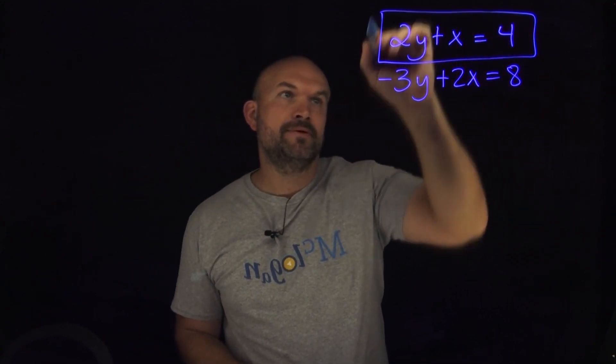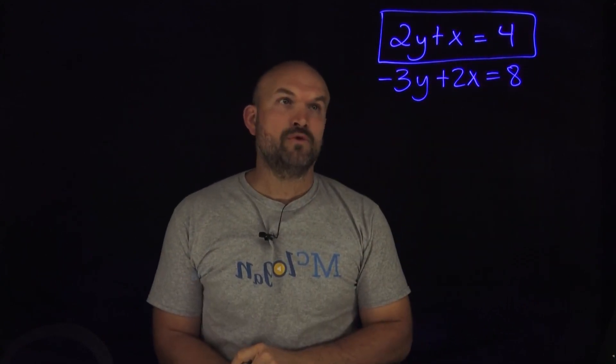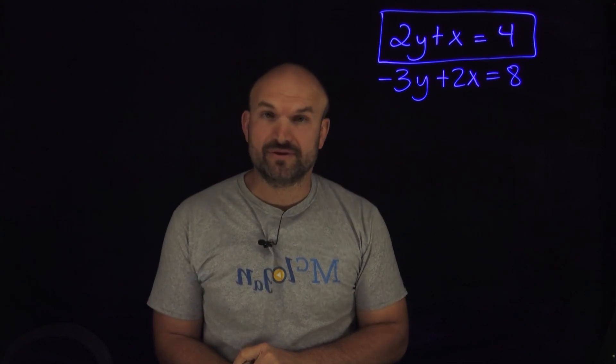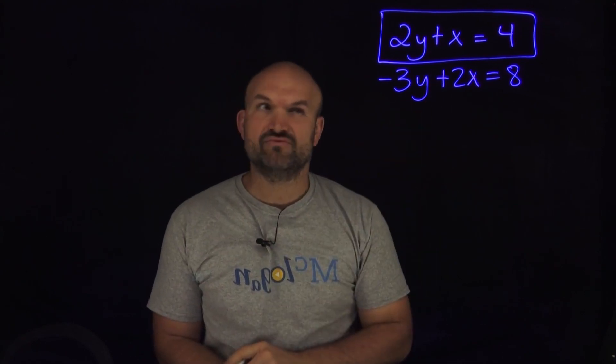You can see in this top equation, right, I have a 2y plus x equals 4. Now, I could solve for the y, I could solve for the x, but do you notice how solving for x is really, really simple, right?